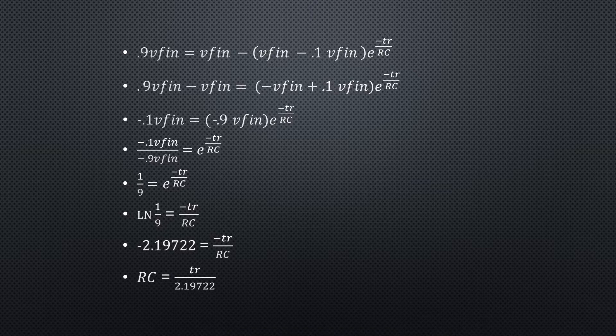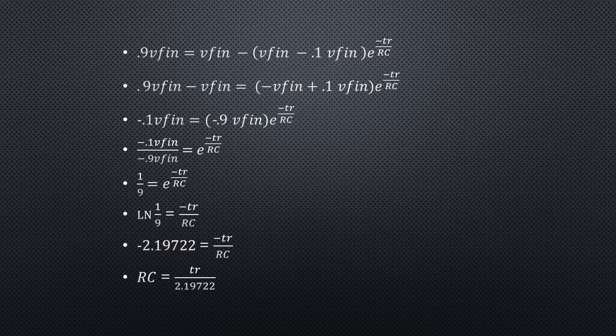Here's the algebra for simplifying this equation in terms of rise time. The key step is where 1/9 equals e raised to the negative rise time over RC. To solve for rise time and RC, take the natural log of the entire equation. This gives us ln(1/9) equals negative tr divided by RC. The final equation is RC equals tr divided by 2.19722.